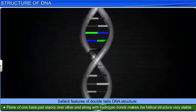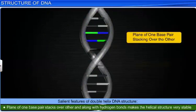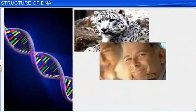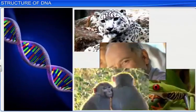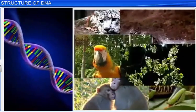Additionally, in a DNA double helix, the plane of one base pair stacks over the other, which along with the hydrogen bonds makes the helical structure very stable. The stable DNA helix structure allows it to be the genetic material that has instructions for the development and functioning of all known living organisms.